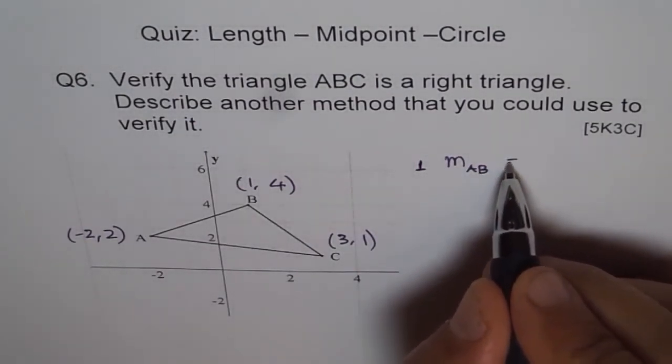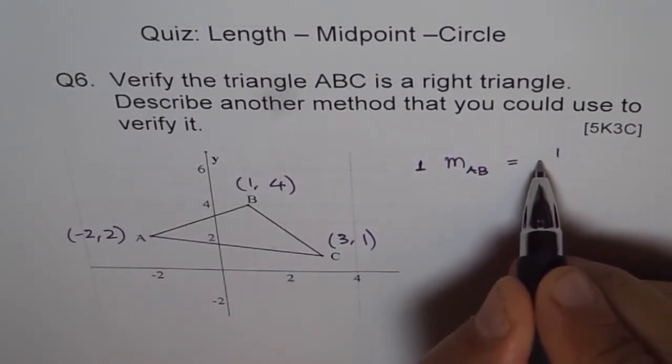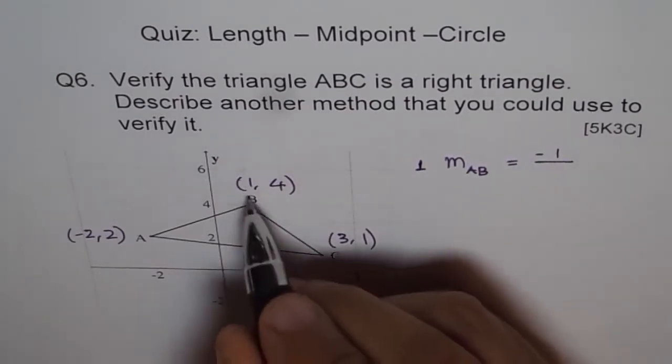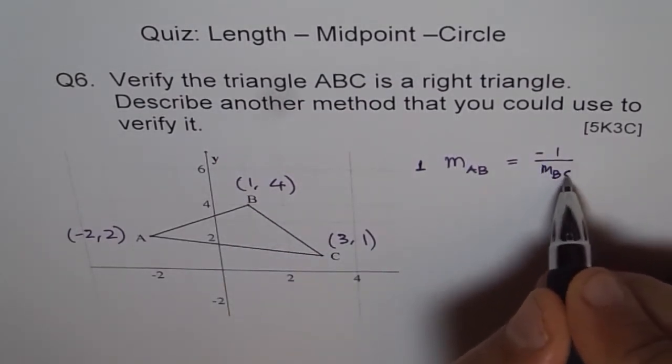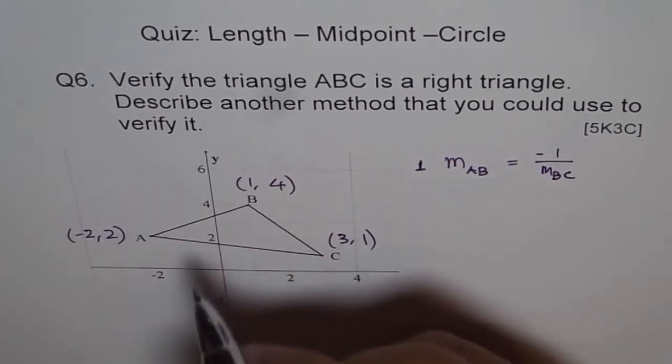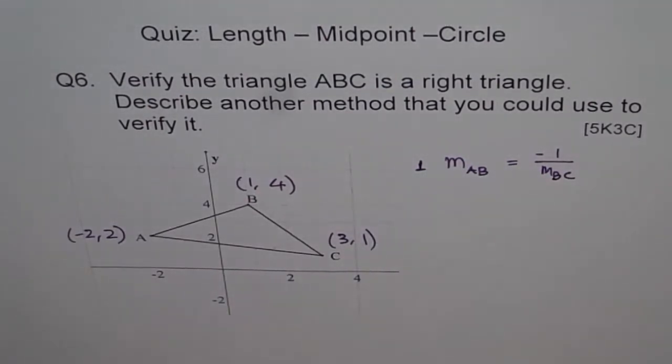If slope of AB equals negative one over slope of BC, the negative reciprocal, then they form a right triangle. Correct?